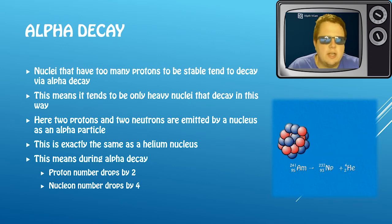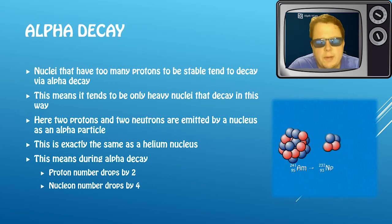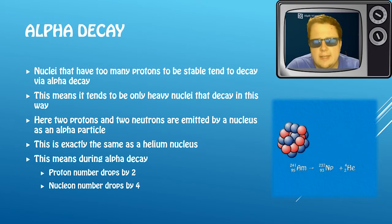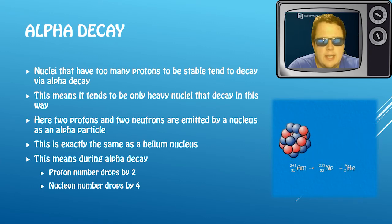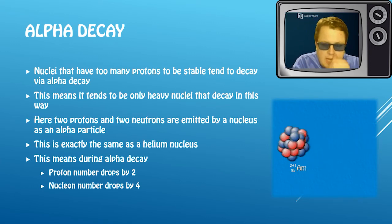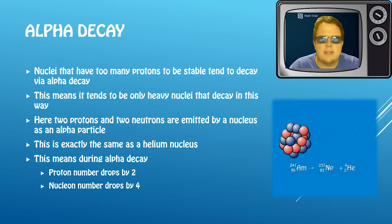And because we have two protons, two neutrons, our nucleon number is going to drop by four and our proton number drops by two. And what you can see here is we have an example decay: we have americium-241 decaying into neptunium and our alpha particle. And you can see that the alpha particle is going away at high speed because the energy that's released goes into the speed of this alpha particle.